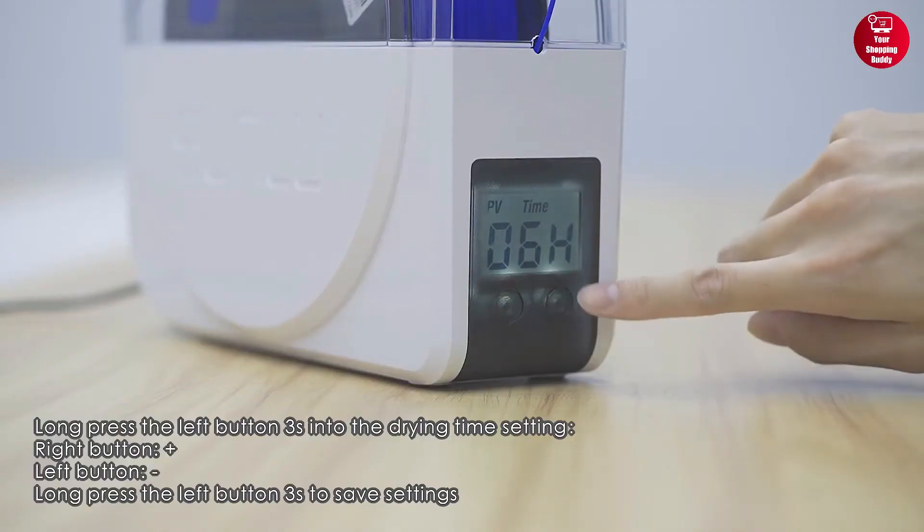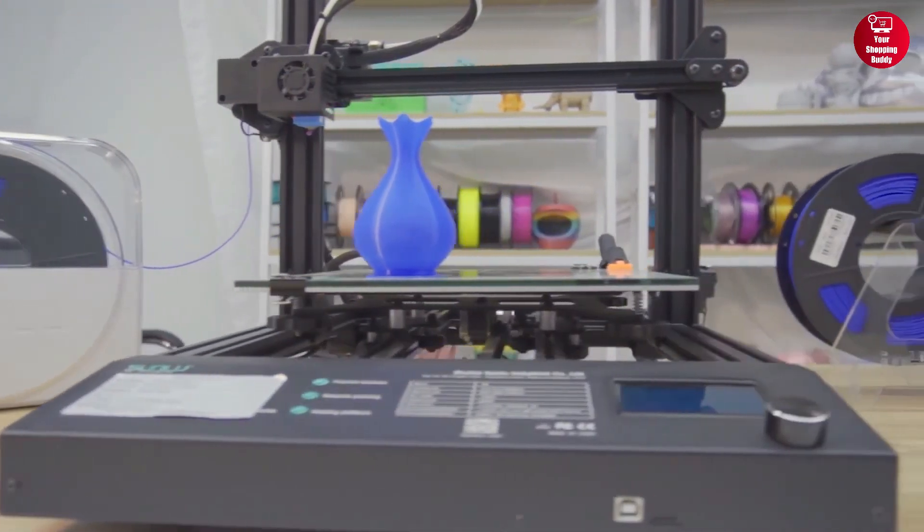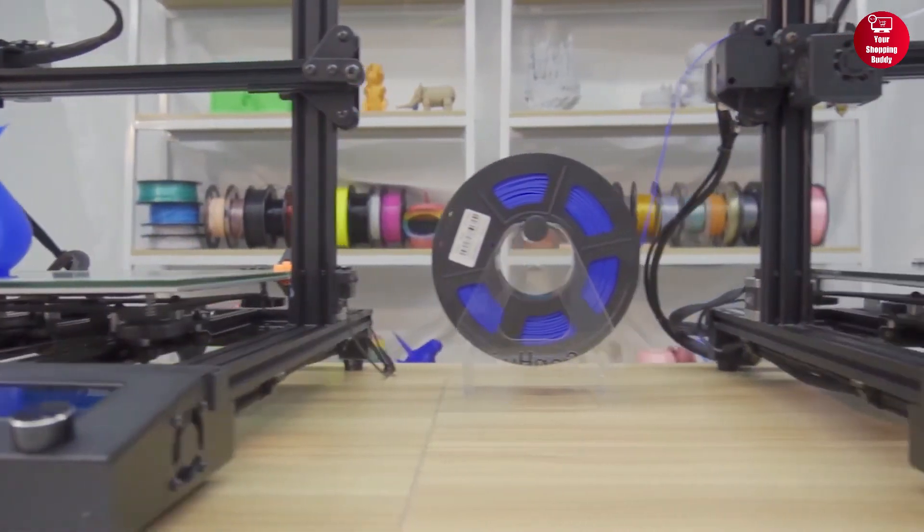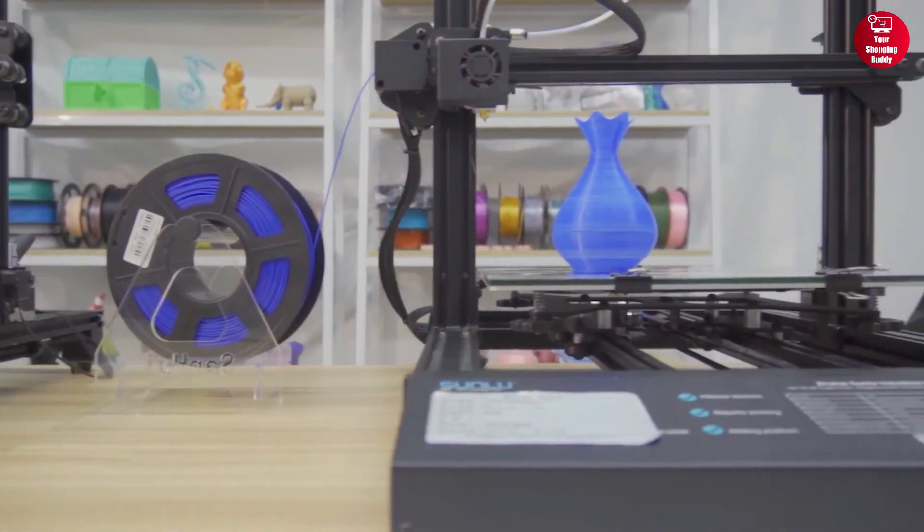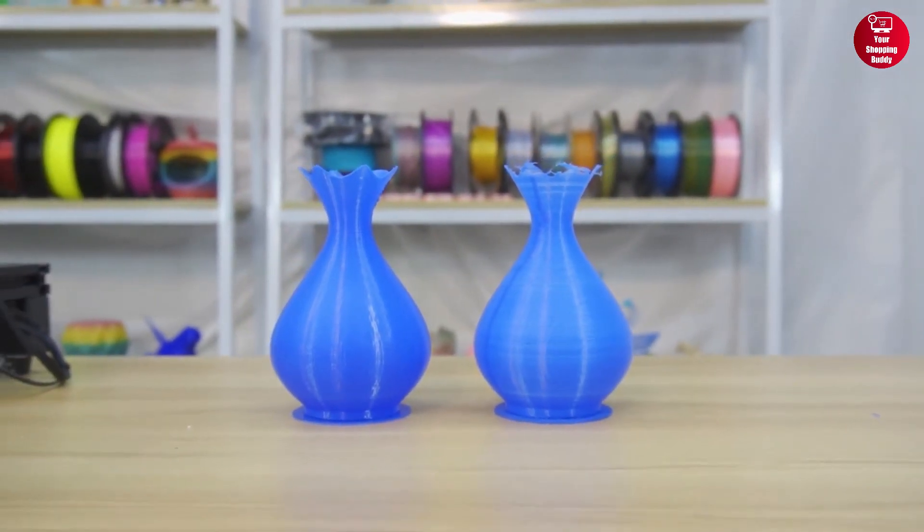The default continuous drying time is 6 hours but you can also manually set it from 0 to 24 hours. With this dryer, most commonly used 3D filament requires only 3 to 6 hours of drying time so that you can achieve a good printing experience and printing effect.